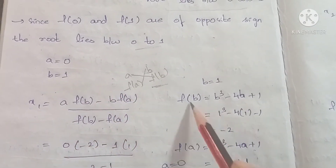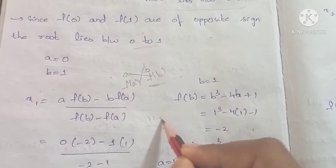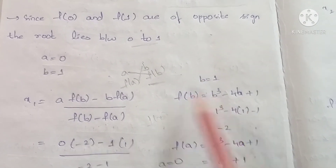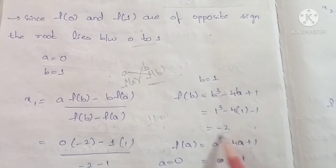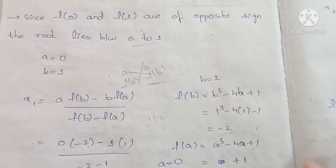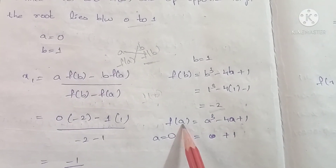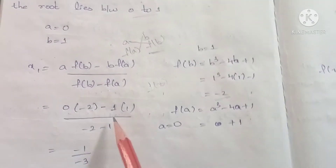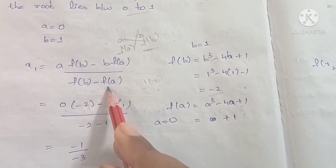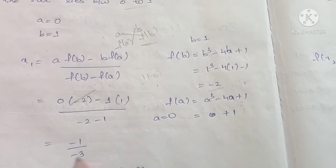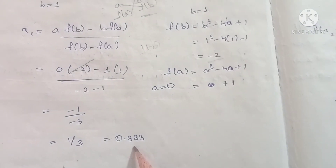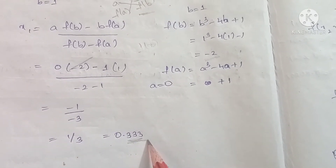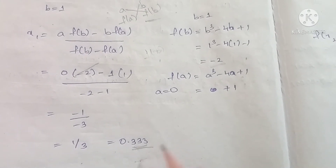Substituting a = 0 into f(a): f(a) = 0³ - 4×0 + 1 = 1. Now applying the formula: x1 = (0 × (-2) - 1 × 1) / (-2 - 1) = -1 / -3 = 1/3. So x1 = 0.333 to 3 decimal places.